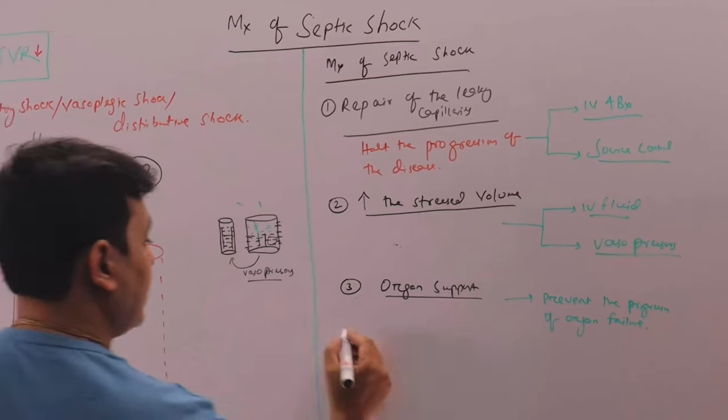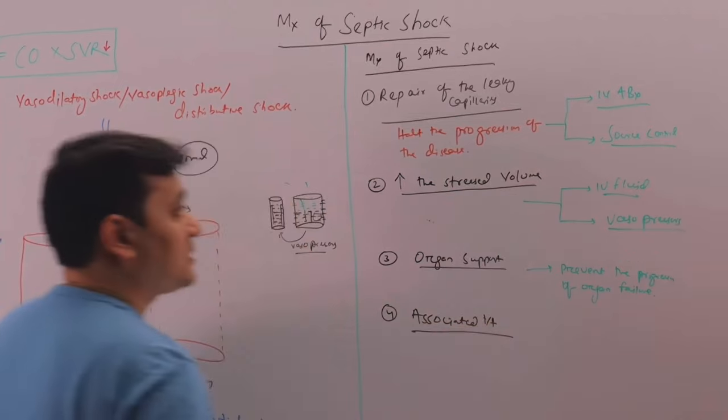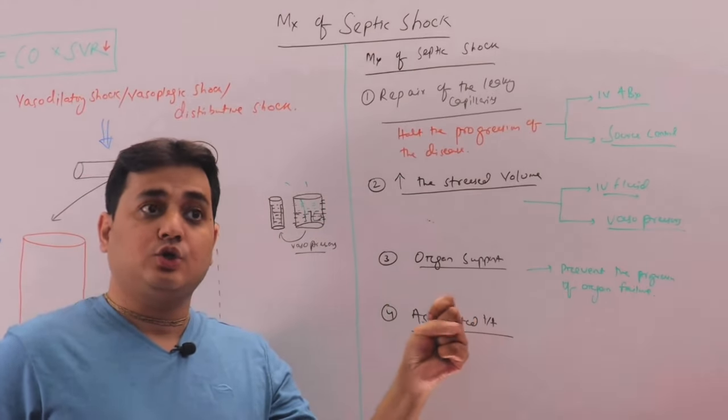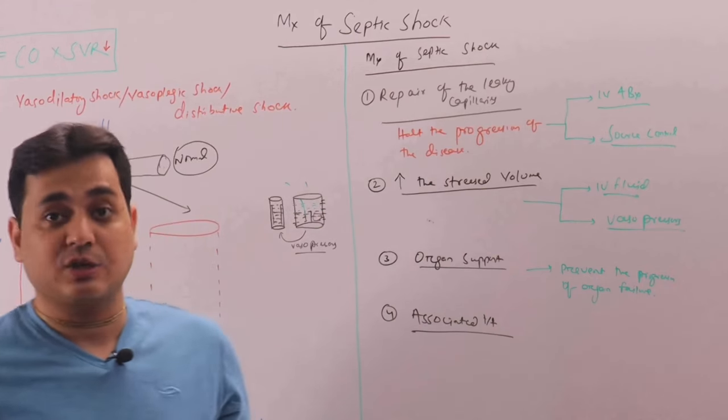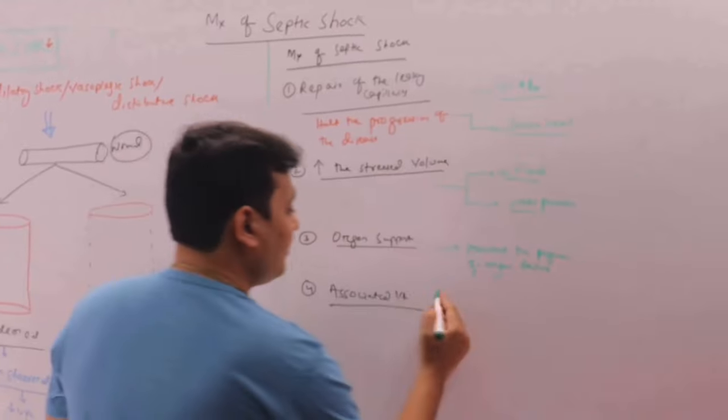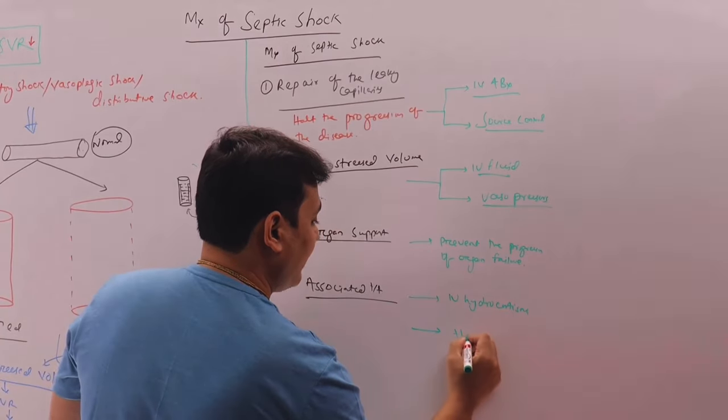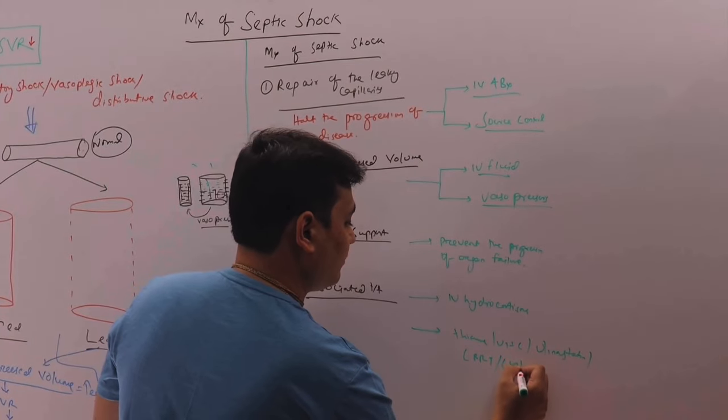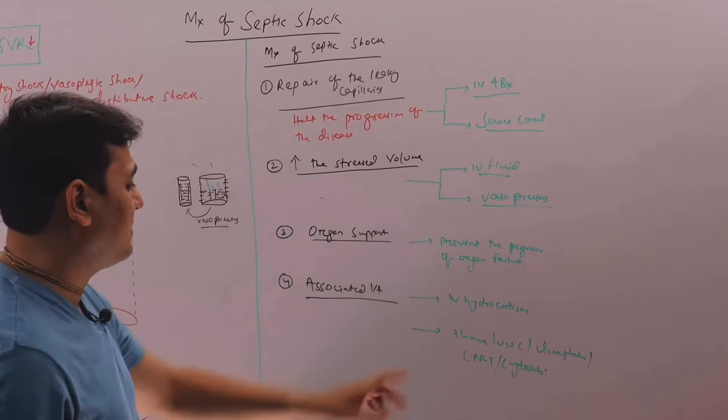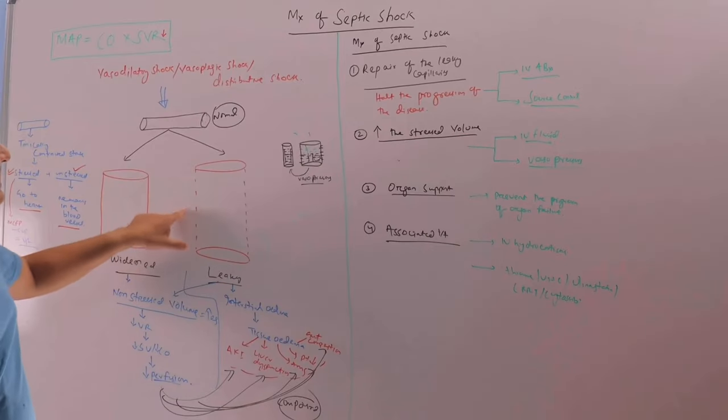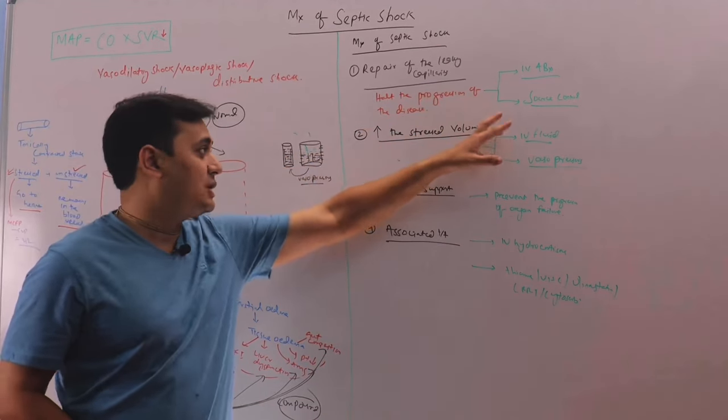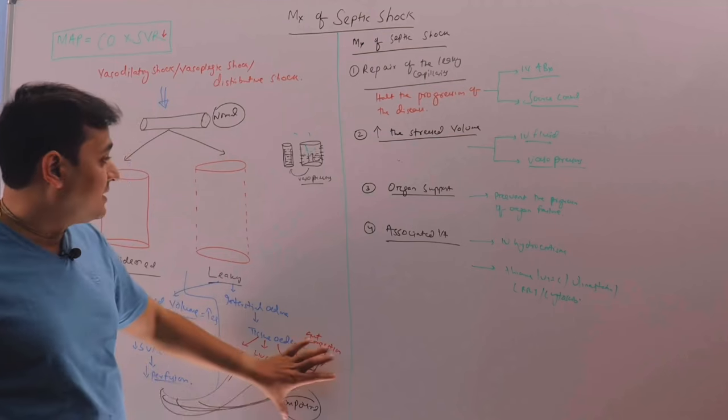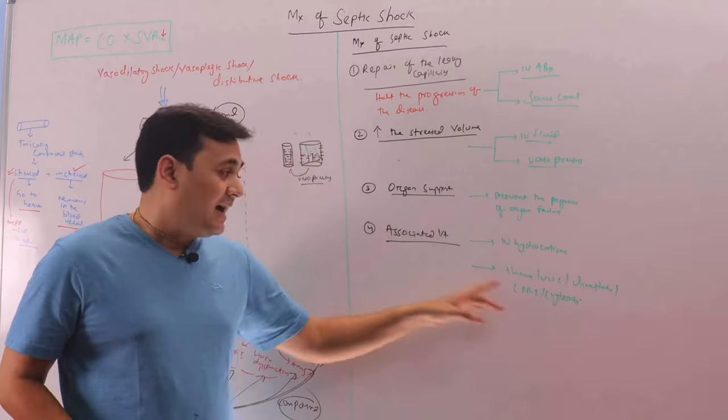Number four concept is adjunctive. For example, many of the septic patients, even if you give IV fluid or vasopressors, the vessels, they remain resistant to the catecholamine. So in sepsis, the responsiveness to catecholamine goes away in some patients. So there, there is role of IV hydrocortisone. Other therapies like we can give thiamine, vitamin C, we can give ulinastatin, we can give CRRT with cytosorb. These are the different things we can try in a septic patient. So the majority of our treatment, because it is a leaky vessel, we have to halt the progression of the disease by giving IV antibiotics and source control. The stress volume can be increased by increasing the IV fluid and then giving vasopressors. And we have to support all the organs here and adjunctive treatment, IV hydrocortisone and other experimental methods are there.